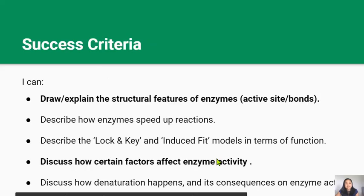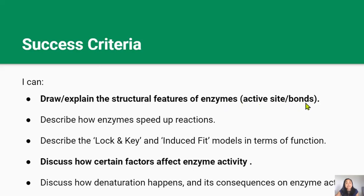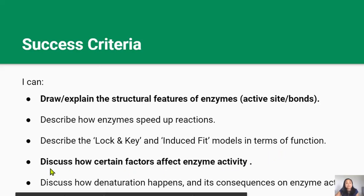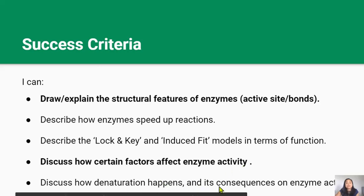By the end of this lesson you should be able to draw and explain the structural features of enzymes like the active site and the bonds holding them together. You should be able to describe how enzymes speed up reactions and describe how the lock and key and induced fit models work. And you should be able to discuss how certain factors affect enzyme activity and how denaturation happens and its consequences on enzyme activity.